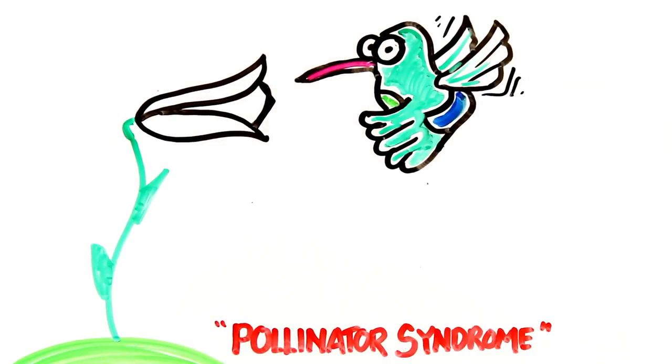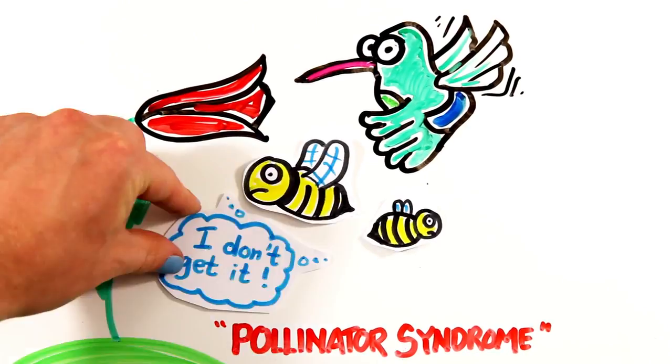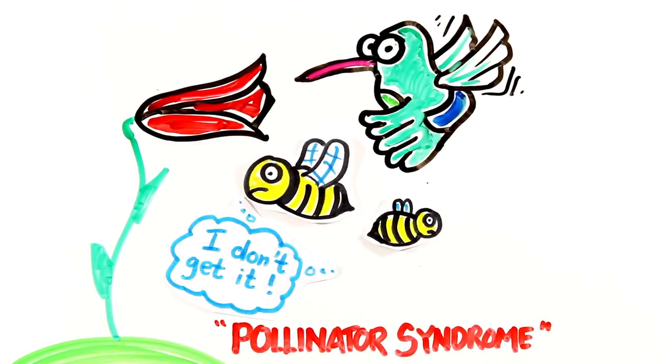Bird pollinated flowers are mostly red, potentially to discourage visits from bees, as their visual system is different than birds, making it hard for them to discriminate between red and green.